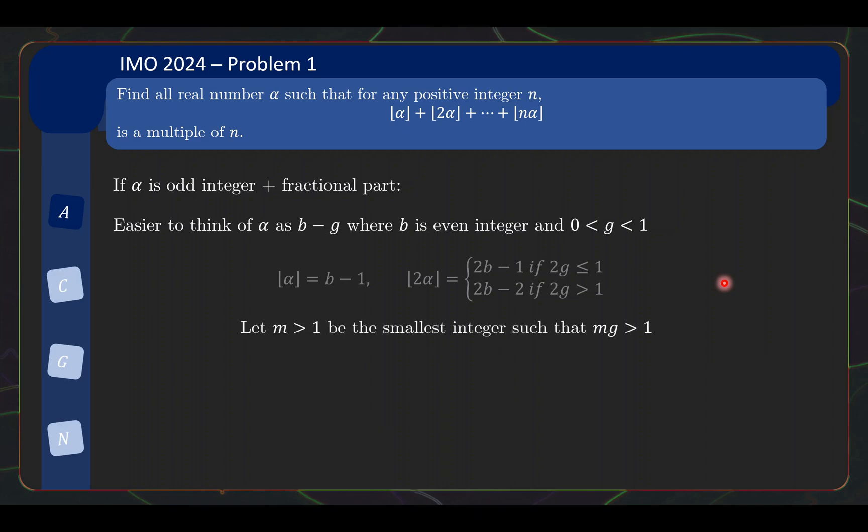The idea is now we let m be the smallest integer such that mg is greater than 1, so it first crosses over the threshold of 1. This time we must use strictly bigger than 1. And what this tells us is that g all the way to (m minus 1)g is less than or equal to 1, but mg is strictly between 1 and 2. So again we need to check that it is less than 2, but this is again easy because g is less than 1 itself.